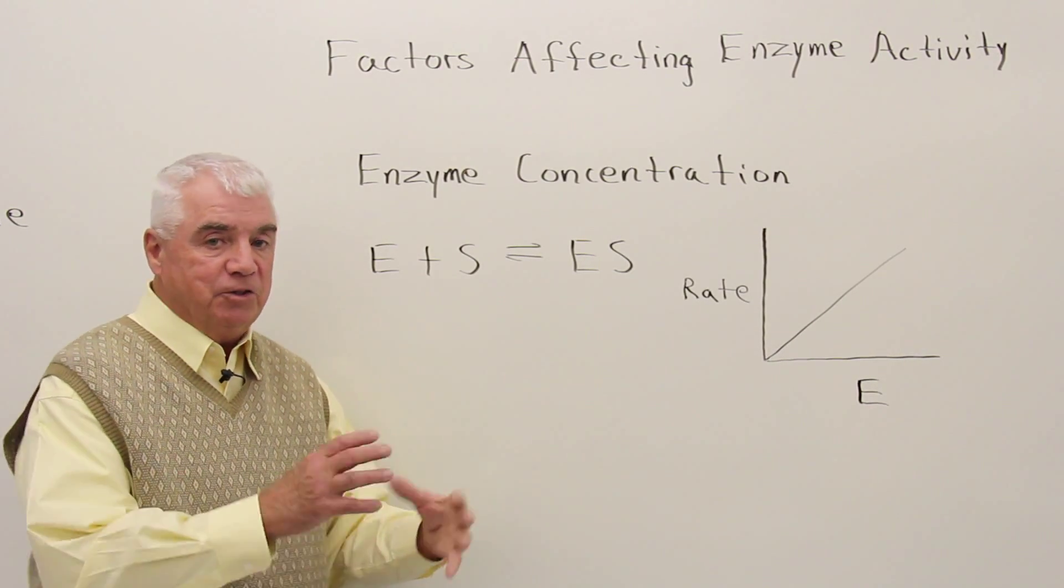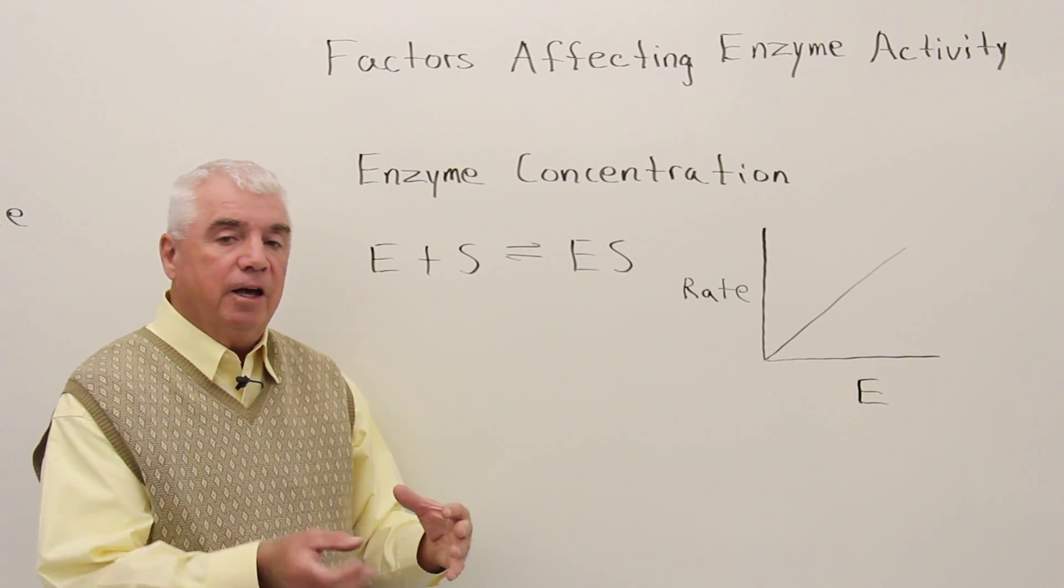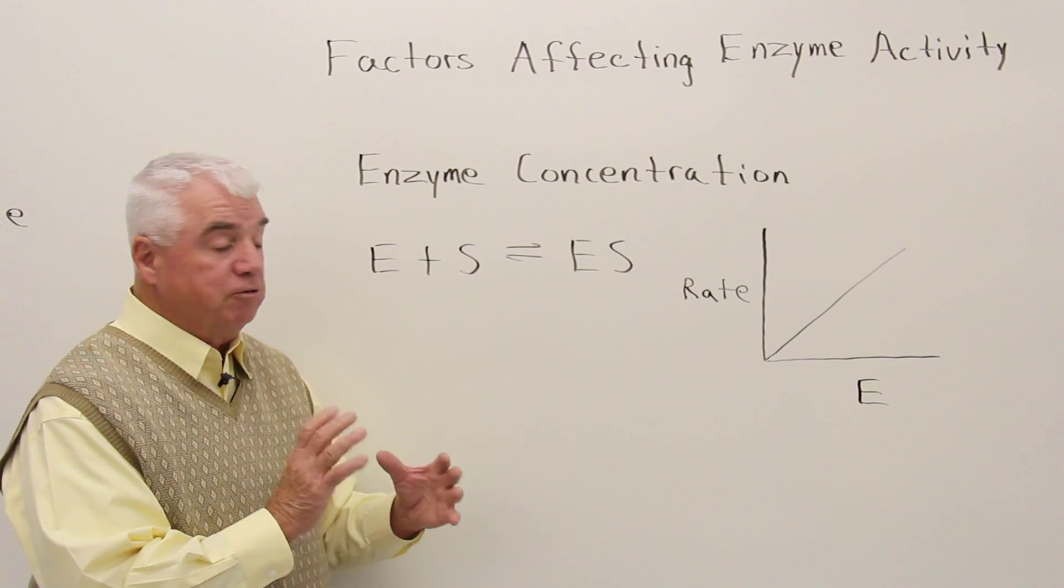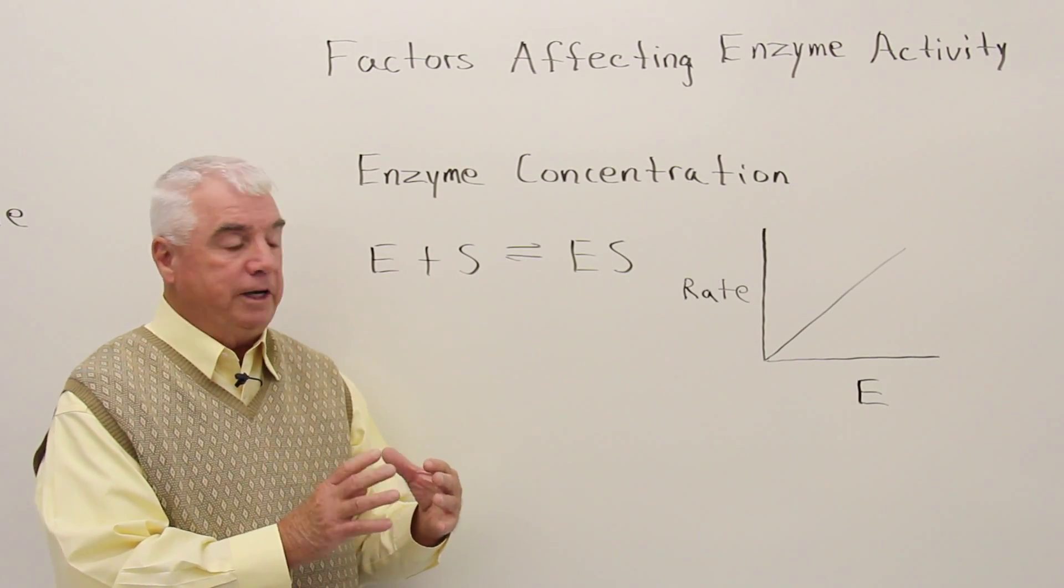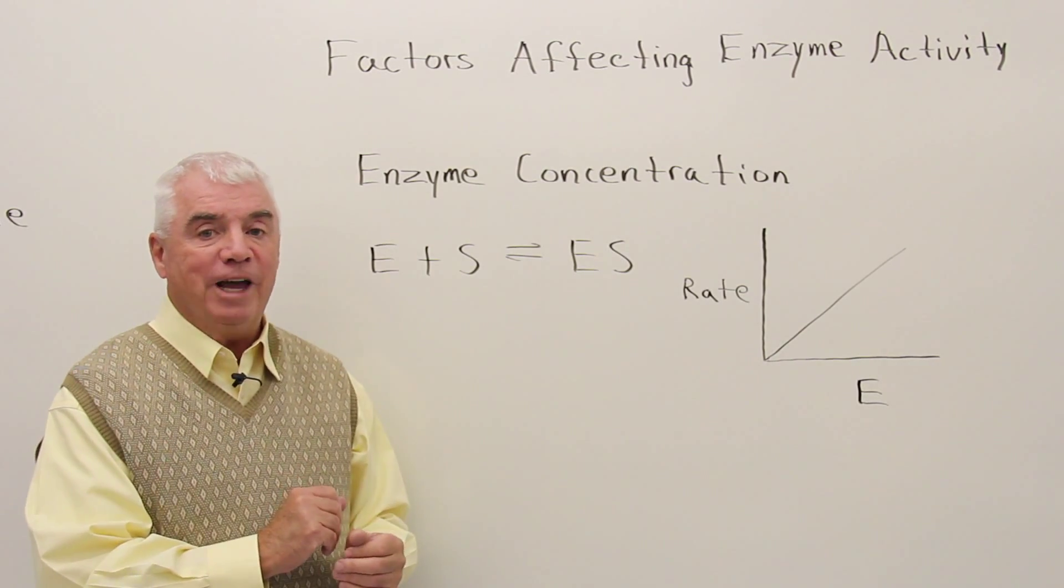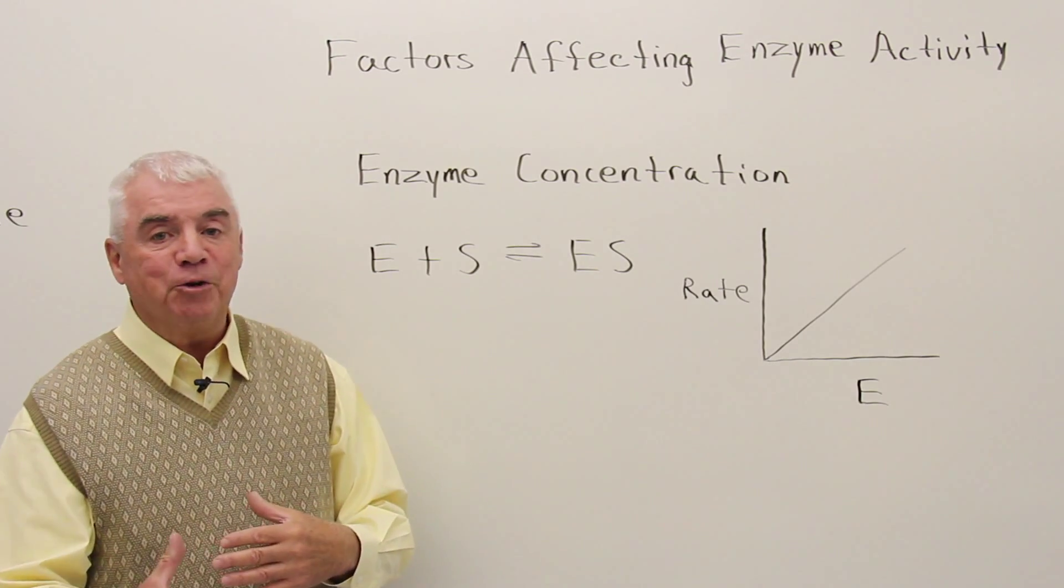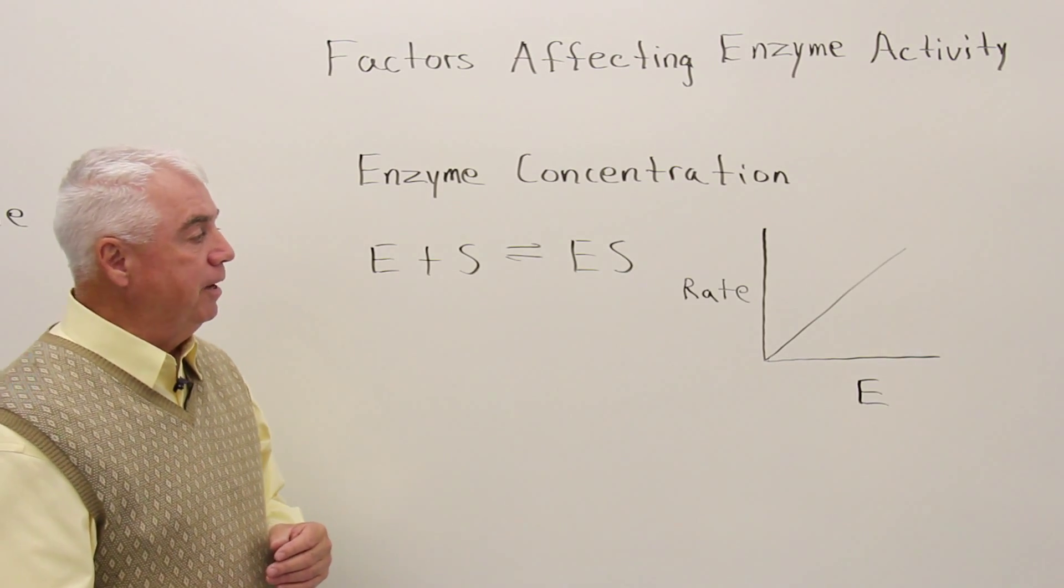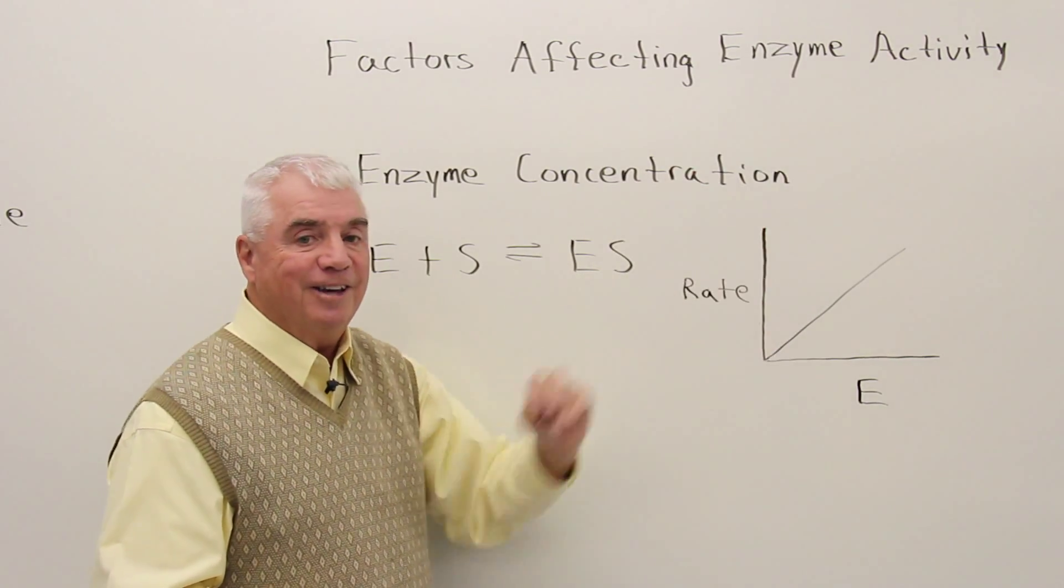In other words, we've got a beaker with some substrate in it. We add some enzyme, and we measure that burst of speed right at that initial point. How fast does the reaction go? We don't measure the rate 10 minutes later or 20 minutes later, but just that initial velocity. And we get a graph like this.